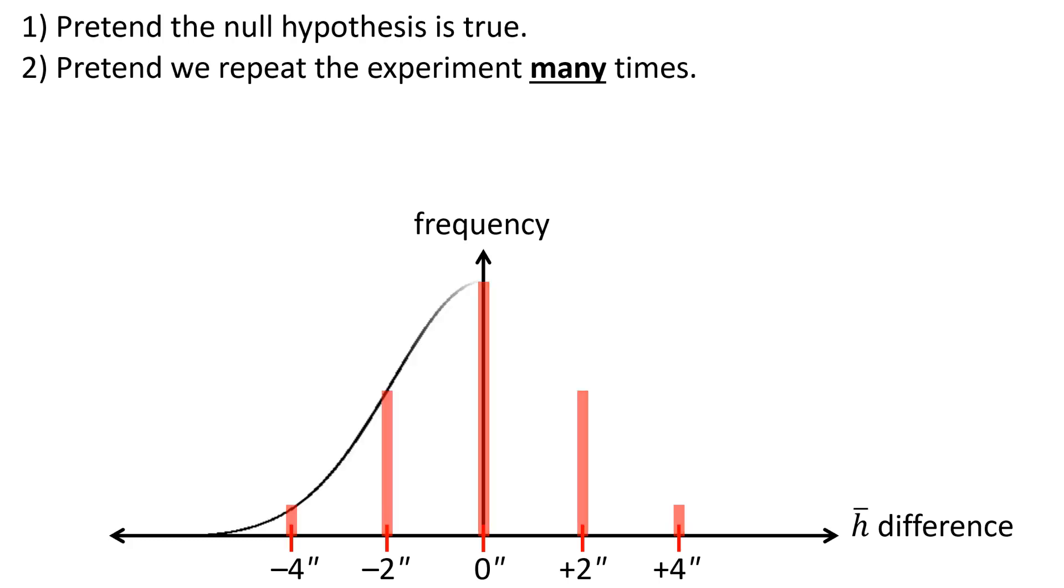If we trace over this, we get a bell curve, or if you really want to impress your friends on Saturday night, you can call this a Gaussian distribution, or a normal distribution.